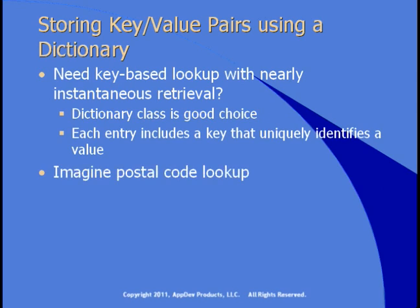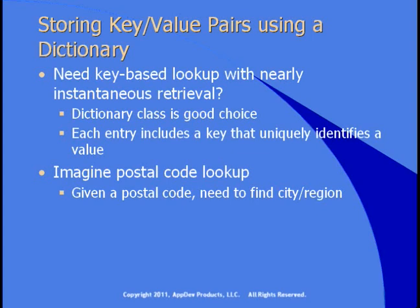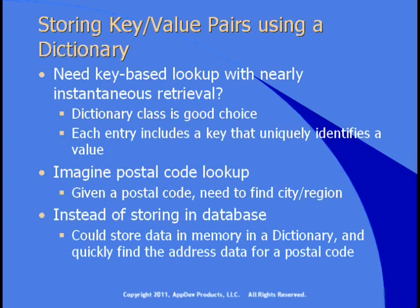Imagine a postal code lookup — given the postal code, you need to find the city and the region. With 100,000 entries in the US, one way is to create a dictionary, load them all in, and quickly find the city and region associated with a postal code. Instead of storing those in a database, you could store them in this dictionary for much quicker access. On a website, you'd get better performance storing them in memory rather than doing a database lookup for each query.